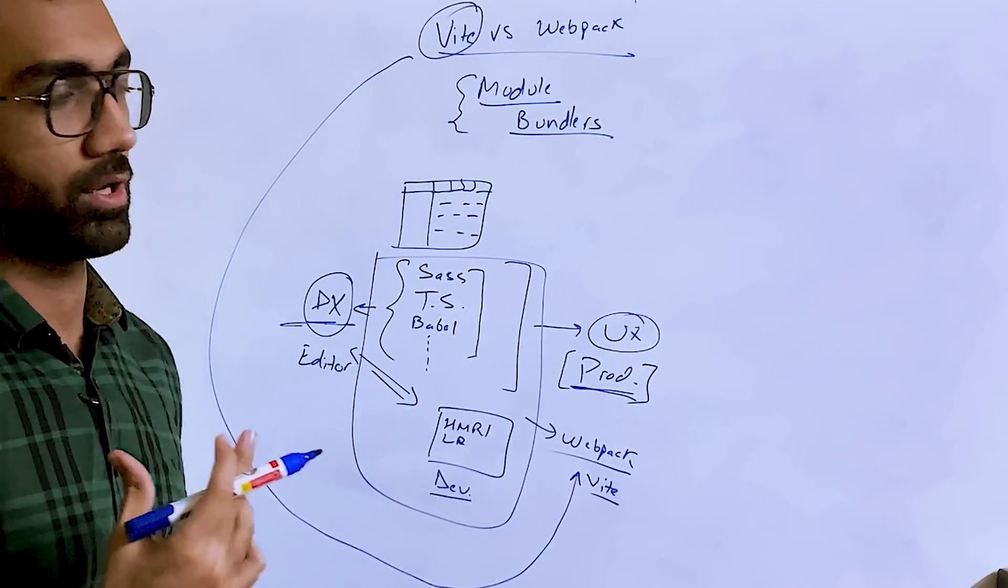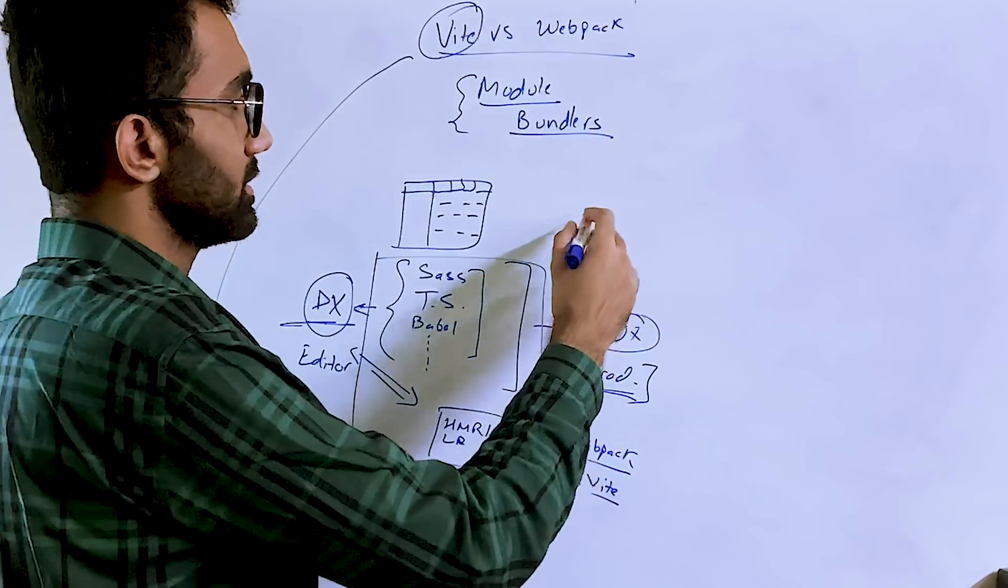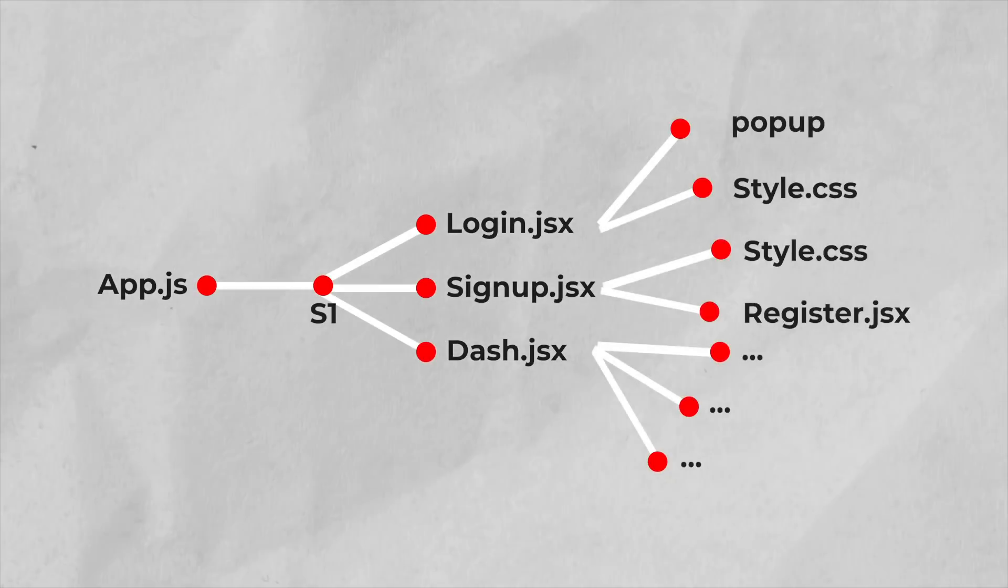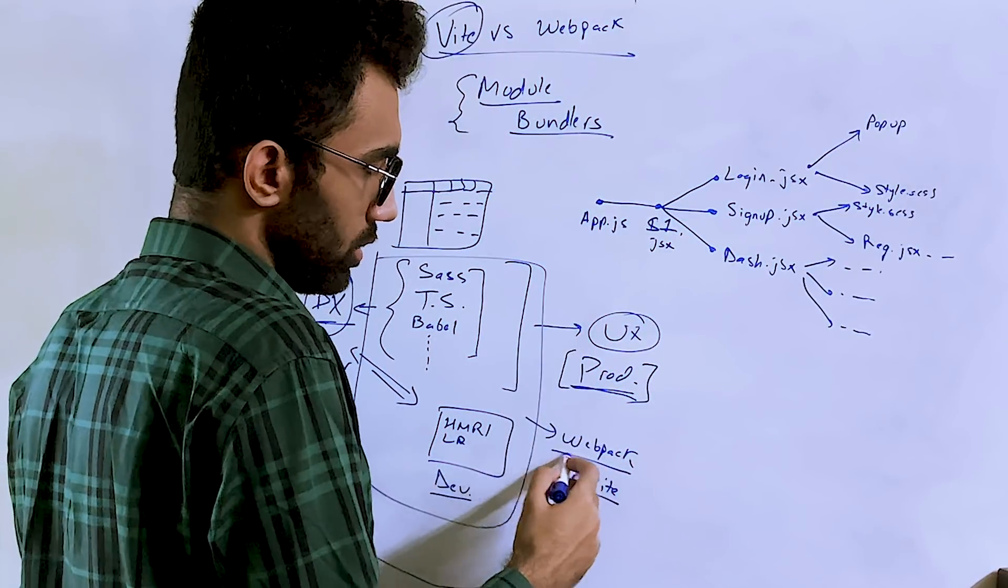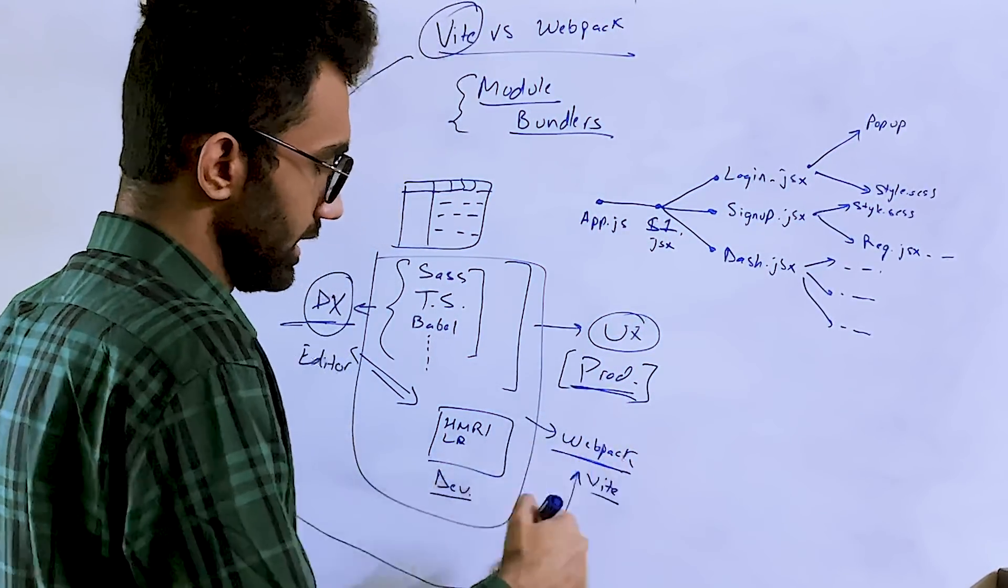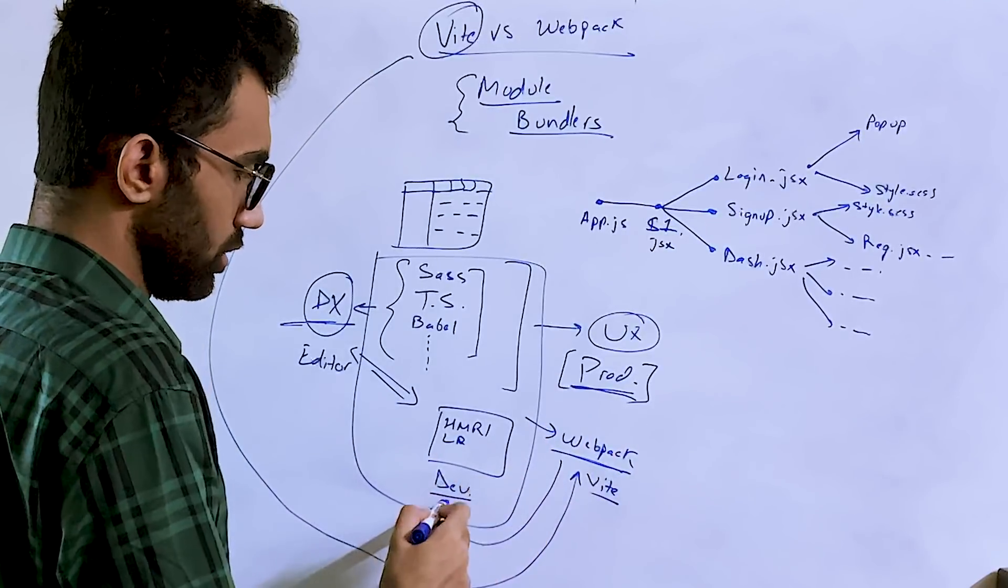The way webpack works is that let's say if you have your app.js as the starting point, what webpack would do is it will start traversing your app. So maybe you have screen one (S1). Let's say this S1 includes three files: it maybe includes login, includes sign up, it includes dashboard. Let's assume this is the kind of network, the file structure, the import tree which we have.